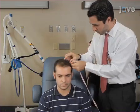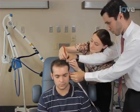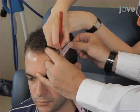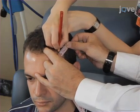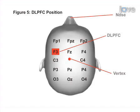To locate the primary motor cortex, or M1, calculate 20% of the auricular distance and measure this distance from the vertex along the auricular line. This spot should correspond to the C3 or C4 EEG location, which is the location stimulated in this video. To locate the dorsolateral prefrontal cortex, measure 5 cm forward from the M1 location; this should correspond to the F3 or F4 EEG location. This method is sufficient when using traditional TDCS electrodes. For more focal TDCS, other methods of cortical localization such as neuronavigation may be needed.